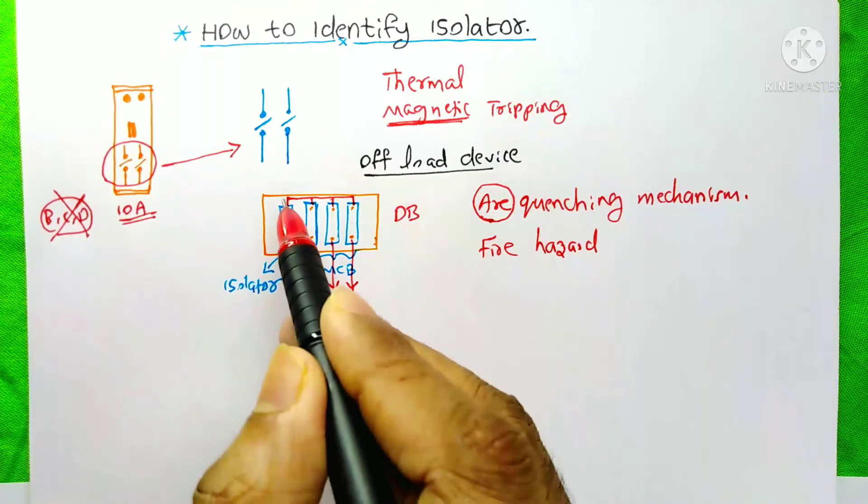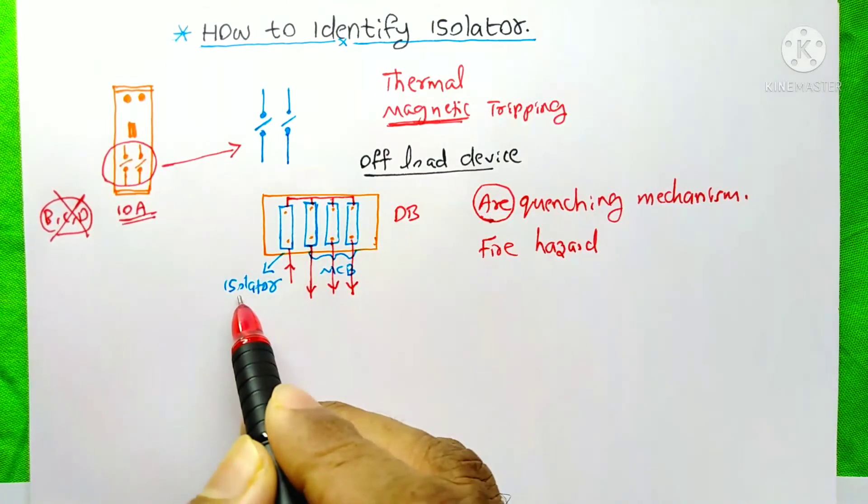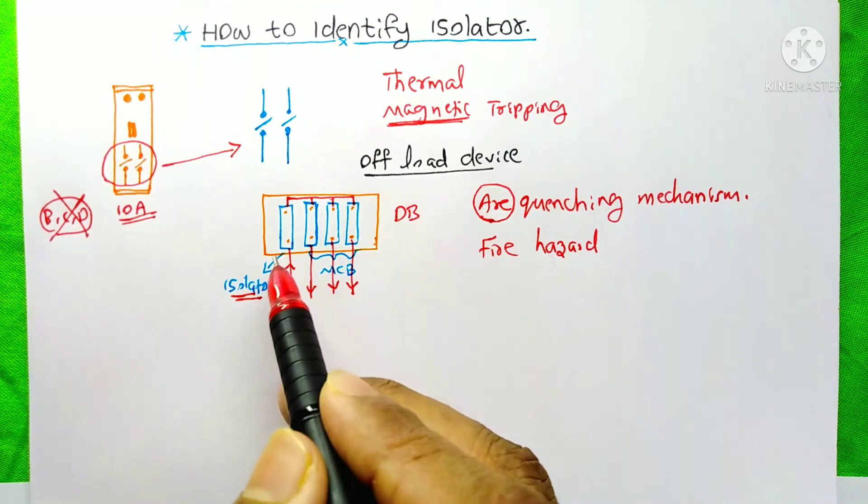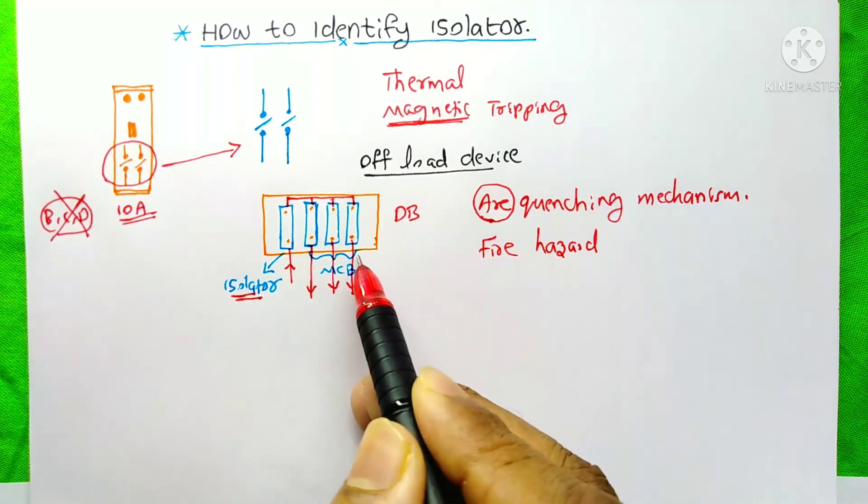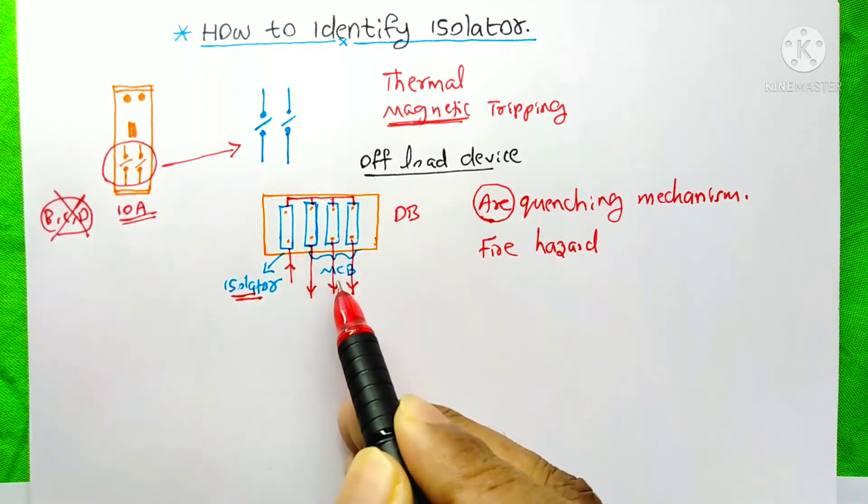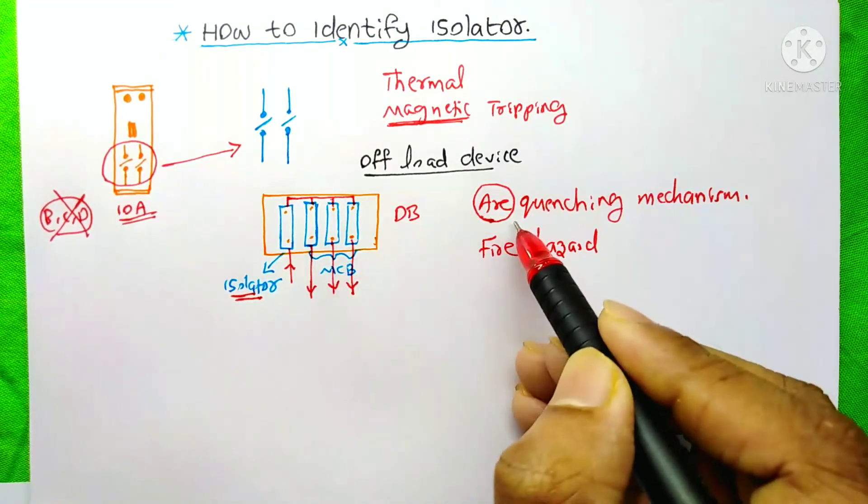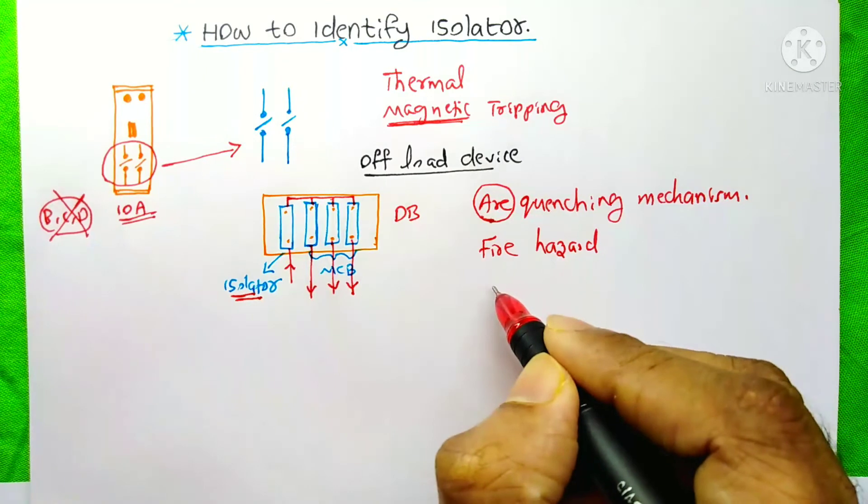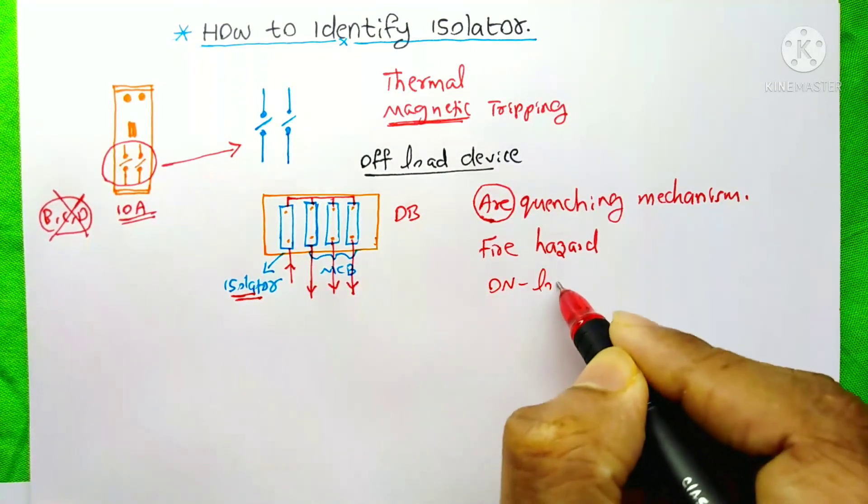But if there is an MCB is on the place of this isolator, then you can easily switch off your main breaker without switch off these MCBs. Because the MCB has the arc quenching mechanism. So we can call the MCB as an onload device.